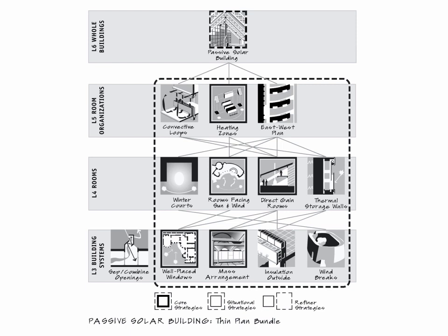The second set is situational strategies — those inside the wrapper that don't have the bold line and work in one variation. Things like east-west plan and convective loops as a way of moving heat between adjacent spaces work better for thin plan. They're not excluded from thick plan, but they're more appropriate for thin plan situations. The ones on the outside, like separated and combined openings, are called refiners — they might help, they might not, but you can decide whether they'll tune up your overall scheme.